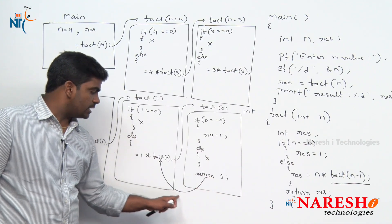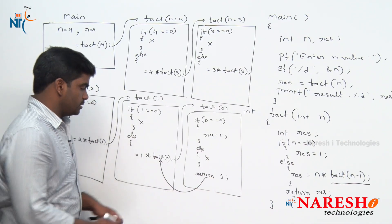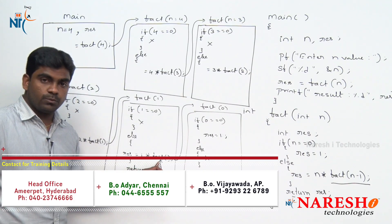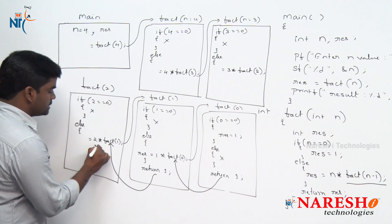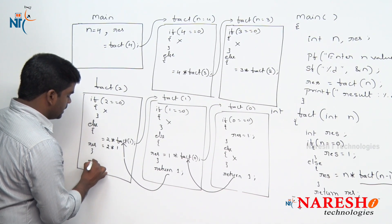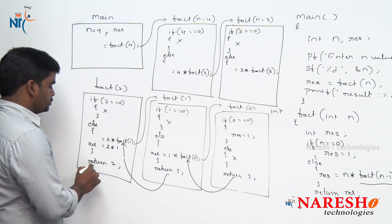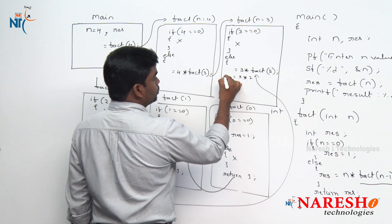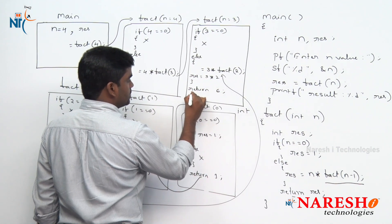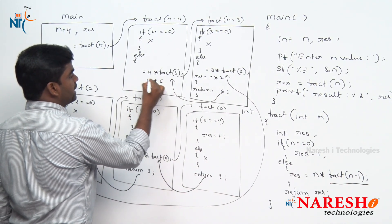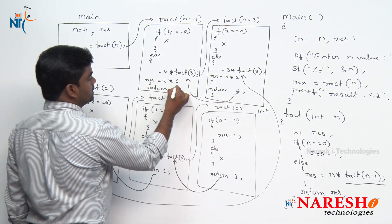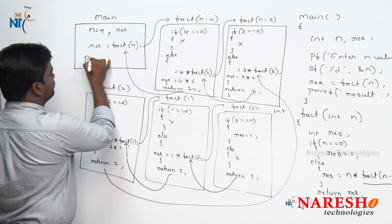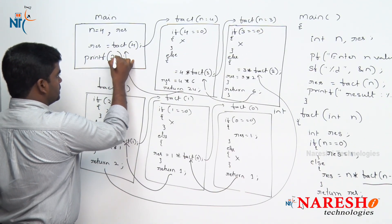After if-else, the last statement returns the result, which is 1. This 1 is returned back to fact of 1 — because fact of 0 was called from there — so 1 multiplied by 1 gives result 1, which is returned to fact of 2. There, 2 multiplied by 1 gives 2, returned to fact of 3. There, 3 multiplied by 2 gives 6, returned to fact of 4. There, 4 multiplied by 6 gives 24, and 24 is returned to the main method result variable. We print that result: 24 — this is the factorial of 4.